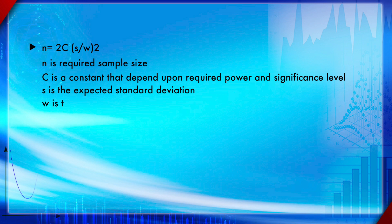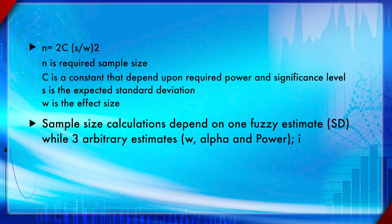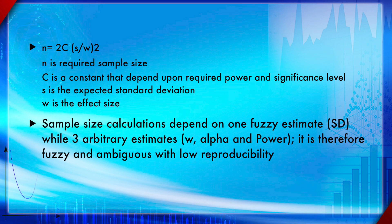The equation to calculate sample size is: n = 2c(s/w)², where n is the number of samples required, c is a constant that depends upon the required power and significance level, s is the standard deviation, and w is the effect size — the expected difference between the means. Sample size calculations depend on one fuzzy estimate, which is the standard deviation, and three arbitrary estimates including alpha and the power. It is therefore fuzzy and ambiguous with low reproducibility.